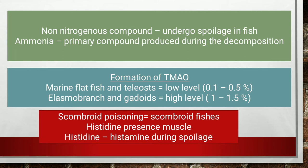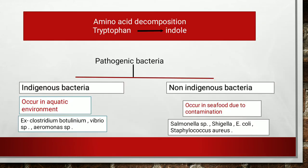Scombroid poisoning, also called histamine poisoning, occurs in scombroid fishes like mackerel and mahi-mahi (dolphin fish). In these fish, histidine present in the muscle undergoes conversion into histamine, which is very poisonous and may cause spoilage in these fishes.